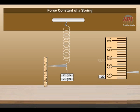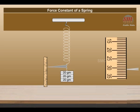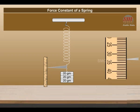7. Repeat steps 5 and 6 till 5 slotted weights have been added. 8. Now remove one slotted weight.